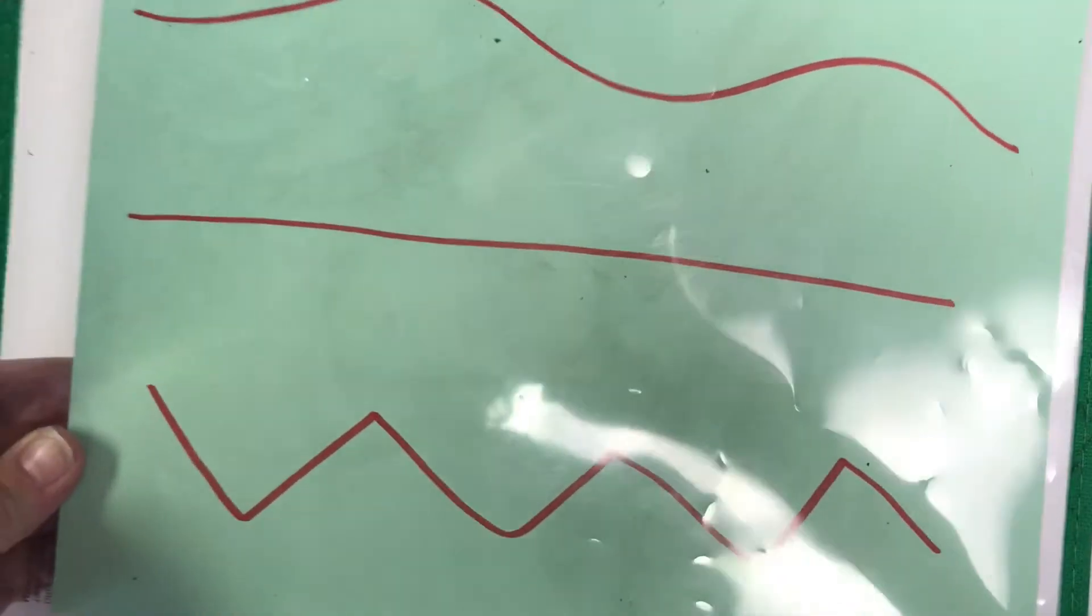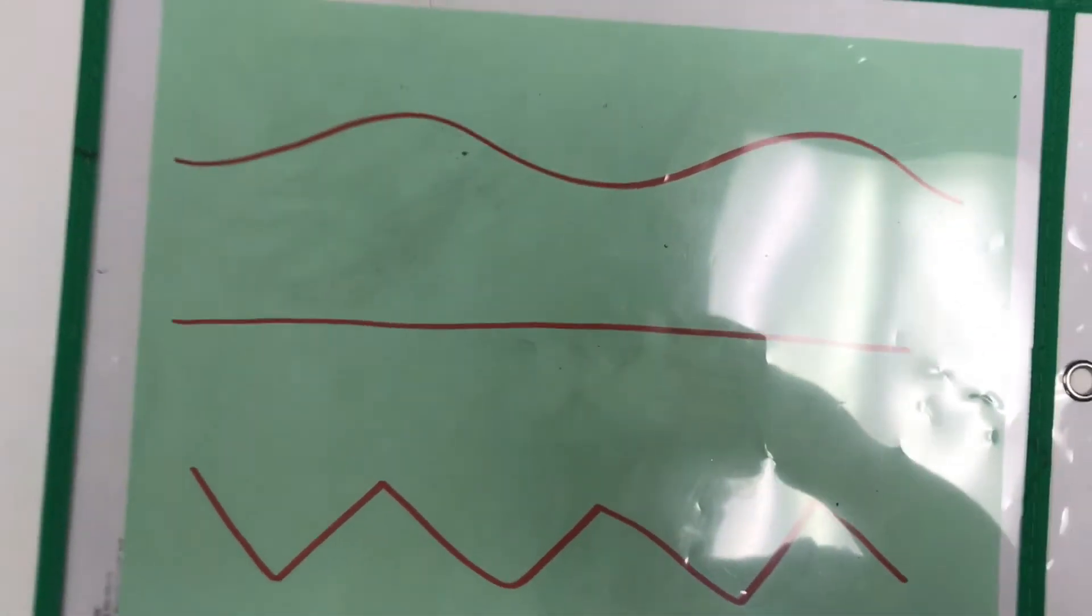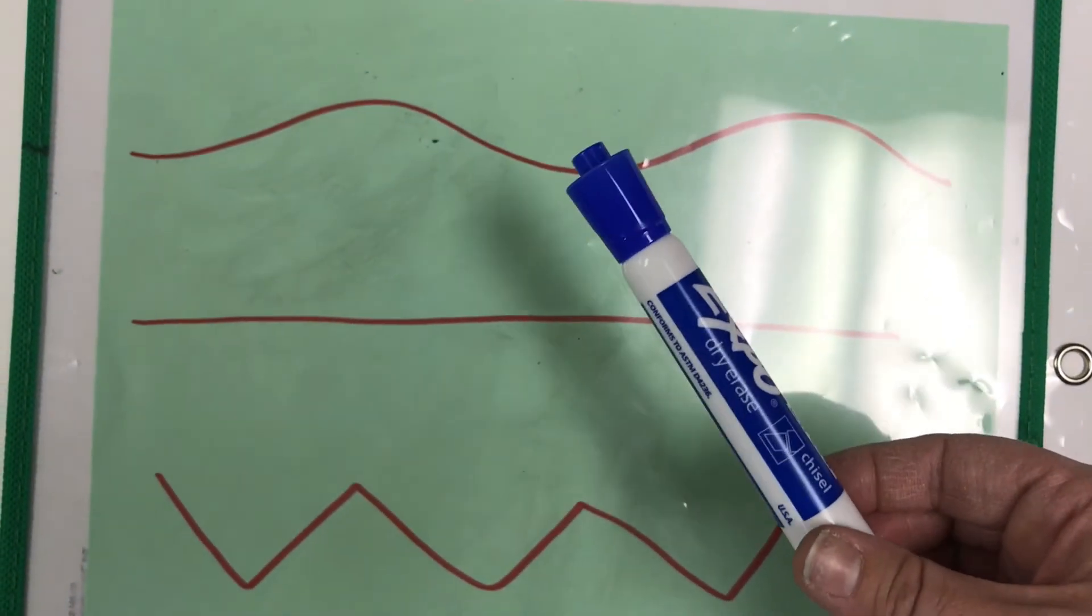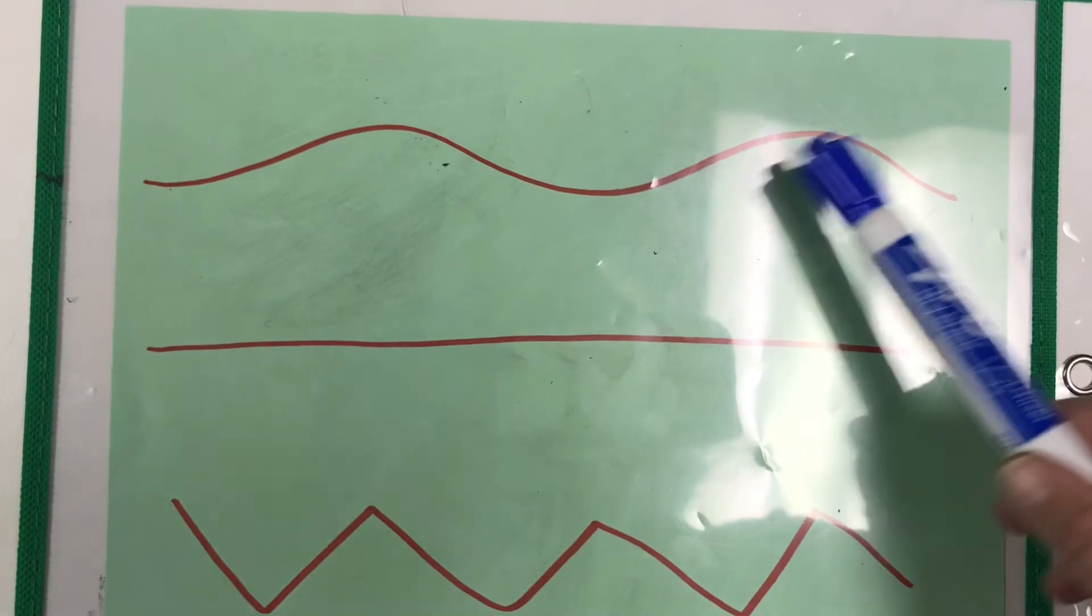After you get those done, I would like your preschooler to take the dry erase marker and try and trace these lines.